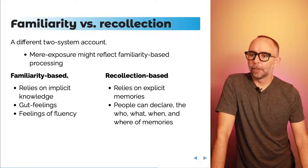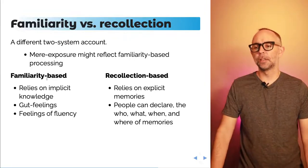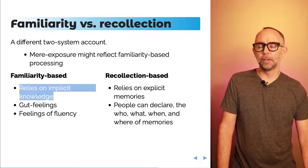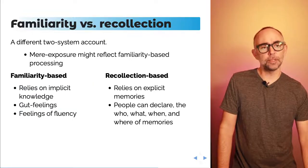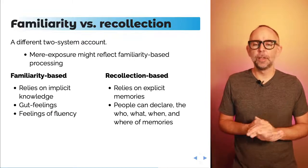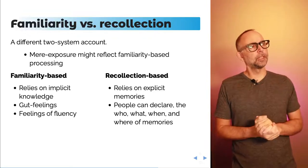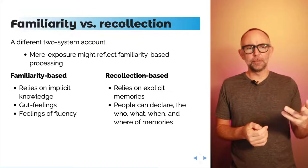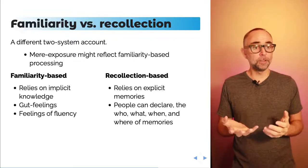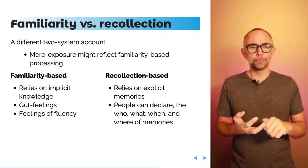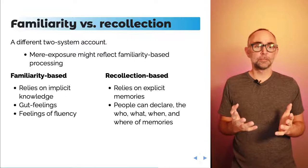In this example, researchers propose that the distinction in the memory literature between familiarity-based processing and recollective-based processing might explain the difference in Zjonc's task. Familiarity-based processing is the idea that memory judgments can rely on implicit knowledge — gut feelings, feelings of fluency, or feelings of familiarity. For example, have you ever been somewhere and just felt like that person seems familiar to you, maybe you know them, but you can't quite place where from? You're having a feeling of familiarity but can't recollect the details.